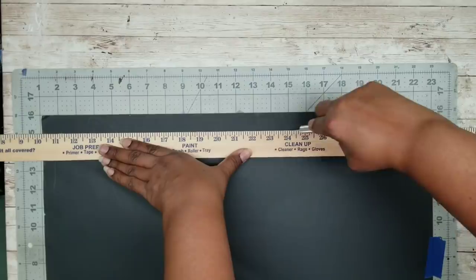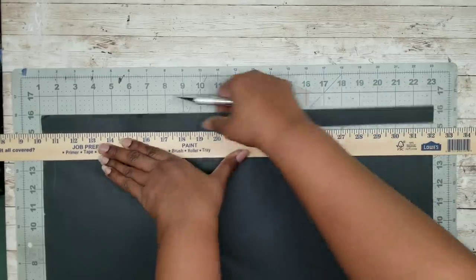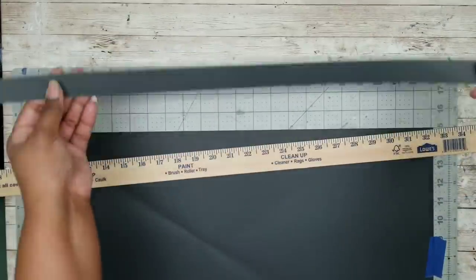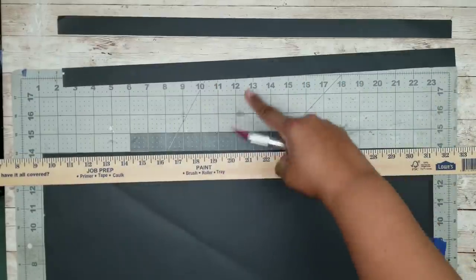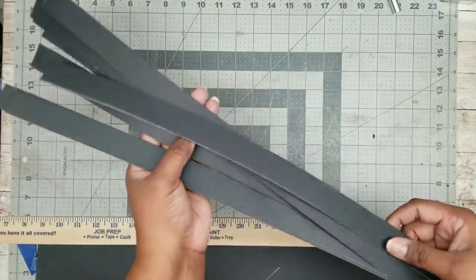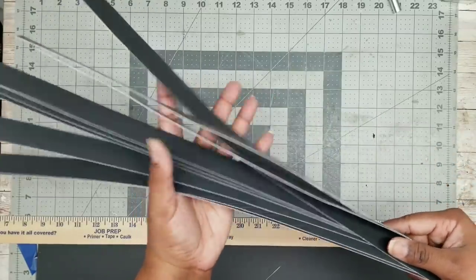Just be careful cutting with this. The X-Acto knife is very sharp and try to keep it as vertical as possible to make your lines nice and crisp. You want to cut out 20 of these one-inch strips along the short side of your poster board and here are all of mine ready to go.